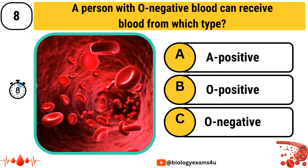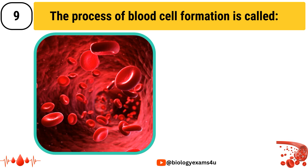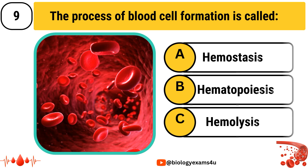The process of blood cell formation is called: Option A: Hemostasis, Option B: Hematopoiesis, Option C: Hemolysis.